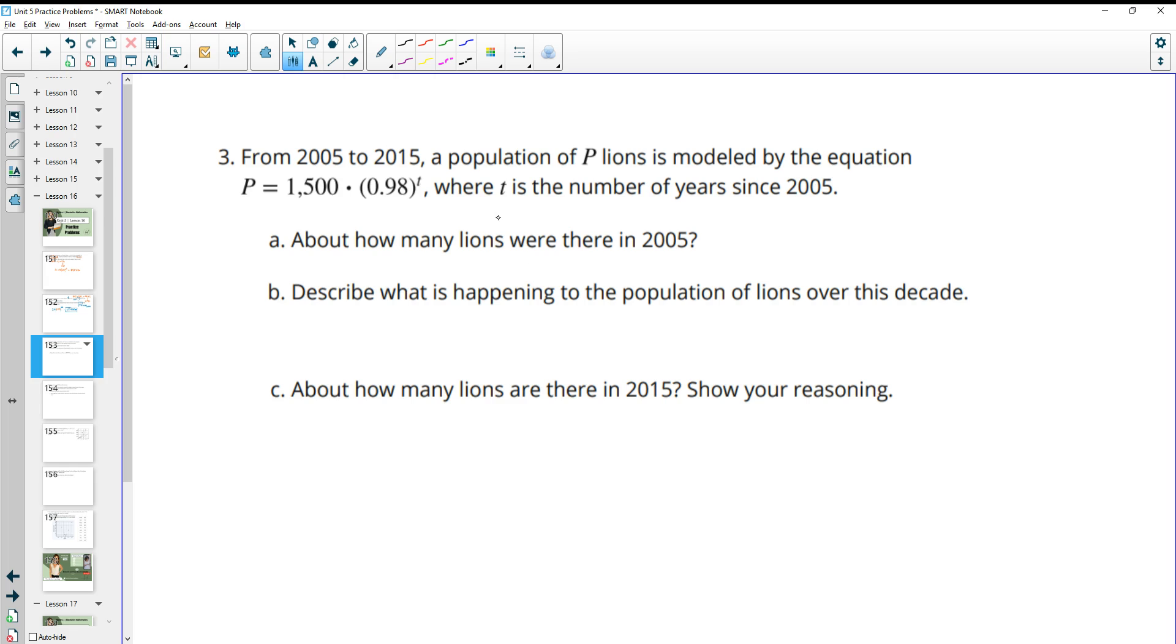Number three, from 2005 to 2015, the population of lions is modeled by the equation 1,500 times 0.98 to the T, where T is the number of years since 2005. How many lions were there in 2005? You can plug zero into the equation for this if you need to use your calculator. Otherwise, remember this number out front is the initial value. So there were 1,500 lions in 2005.